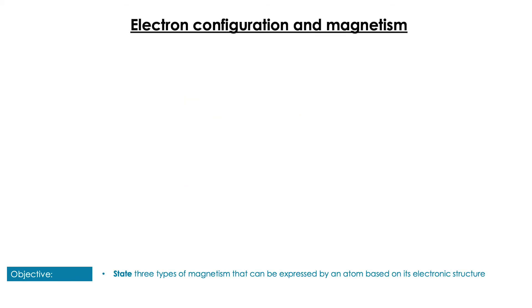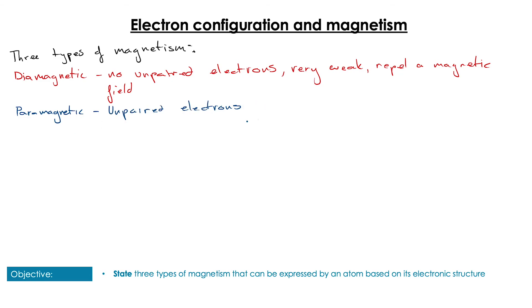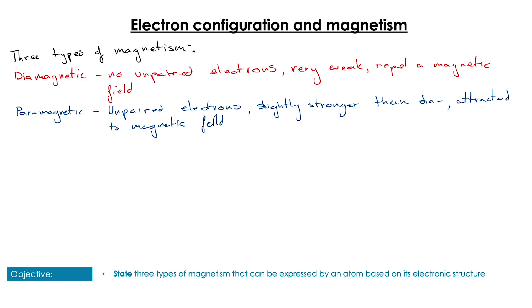Before we take another look at the complexes, I wanted to cover magnetism. There are actually three types of magnetism that go beyond the types you may be familiar with. First, we have diamagnetic — this is something that has no unpaired electrons. It is a very weak magnetic force and it repels a magnetic field. Paramagnetism, on the other hand, is where we do have unpaired electrons. This is a slightly stronger force and it is instead an attractive force, so the unpaired electrons are attracted to a magnetic field.